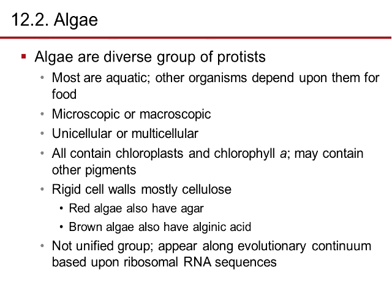Algae are a diverse group of protists. Most are aquatic, and other organisms depend on them for food. They can be microscopic or macroscopic — invisible to the naked eye or visible. They can be unicellular or multicellular. All contain chloroplasts and chlorophyll plus other pigments, so they are definitely photosynthetic. Their rigid walls are mostly cellulose — not chitin and not peptidoglycan. Red algae have agar within their cell walls; brown algae have alginic acid. They are being reorganized along evolutionary continuums based on ribosomal RNA sequences.